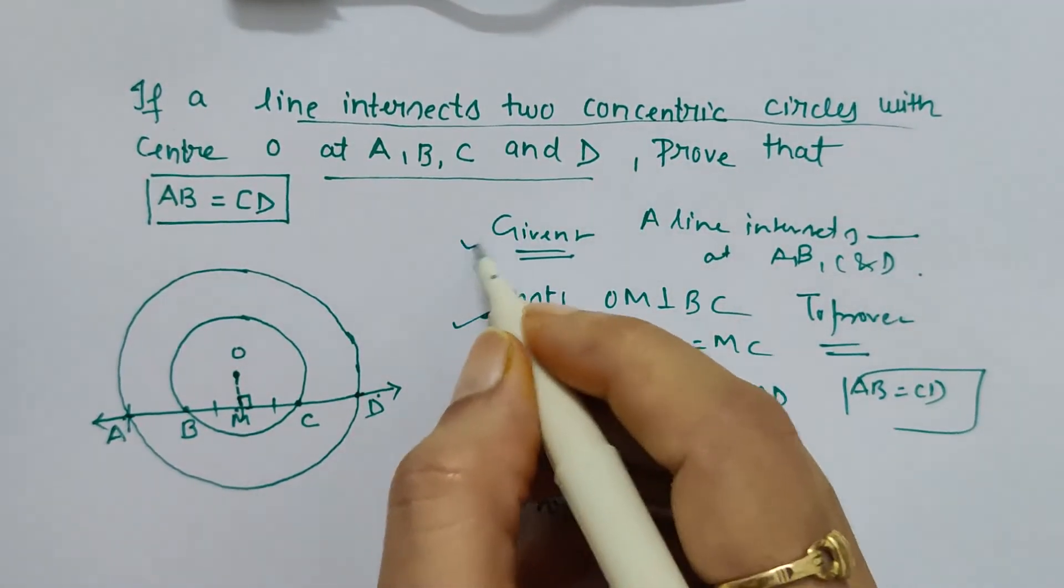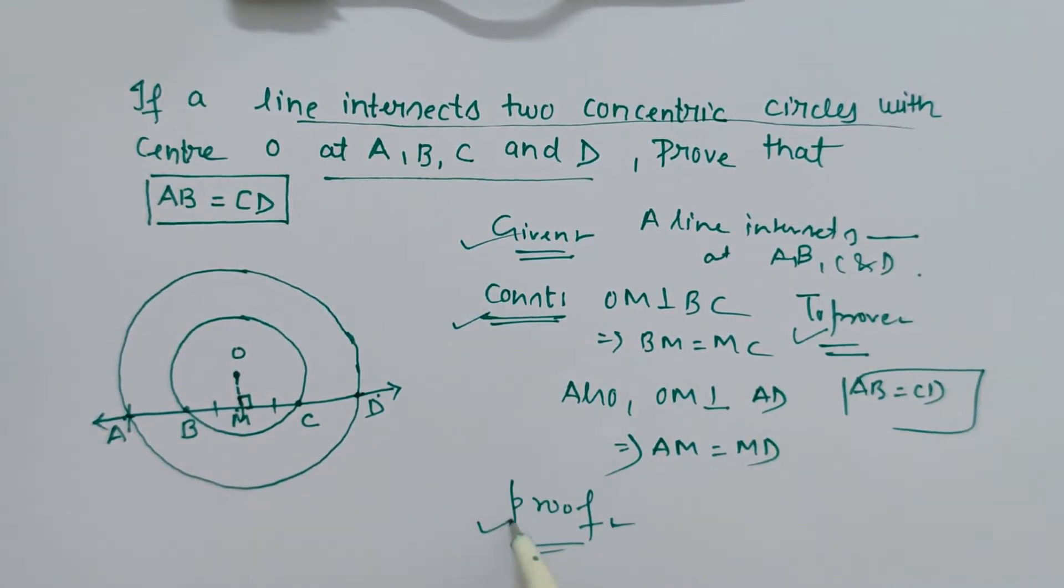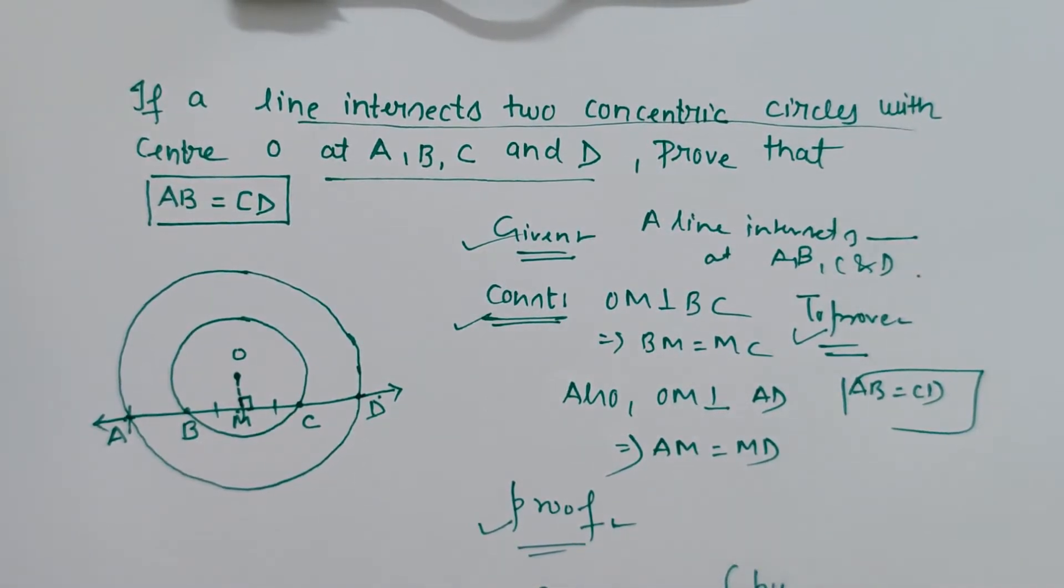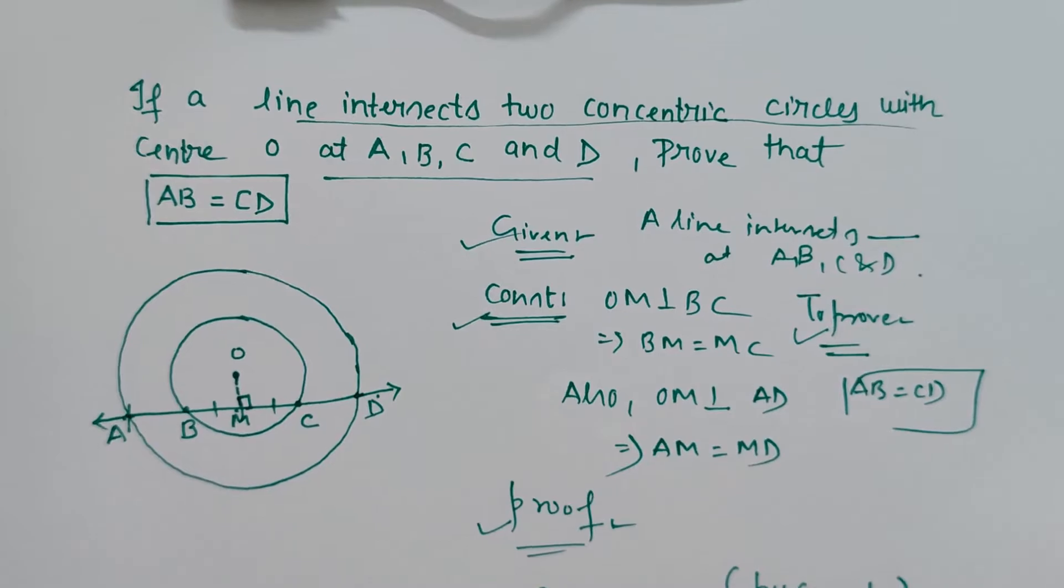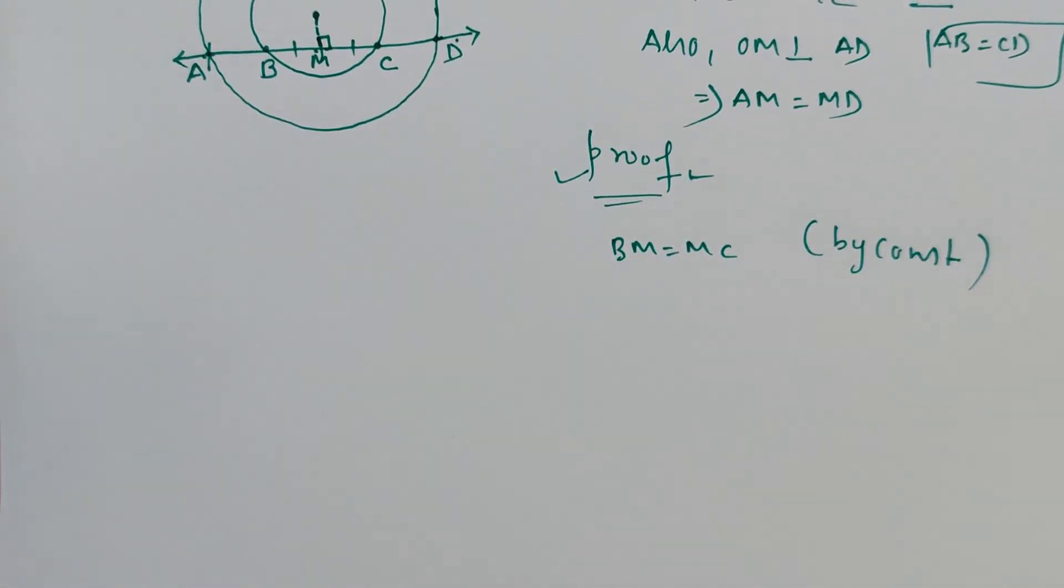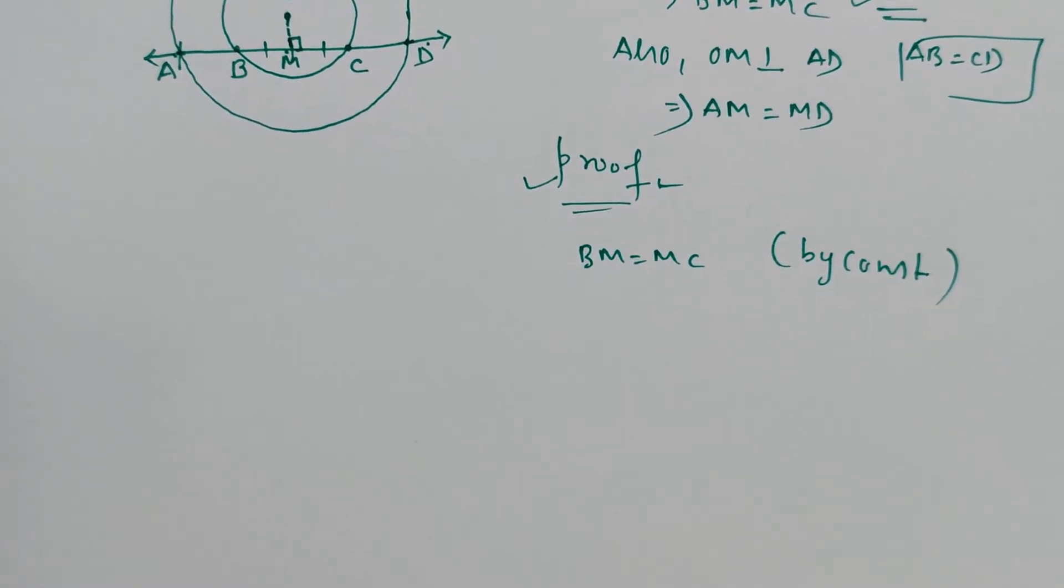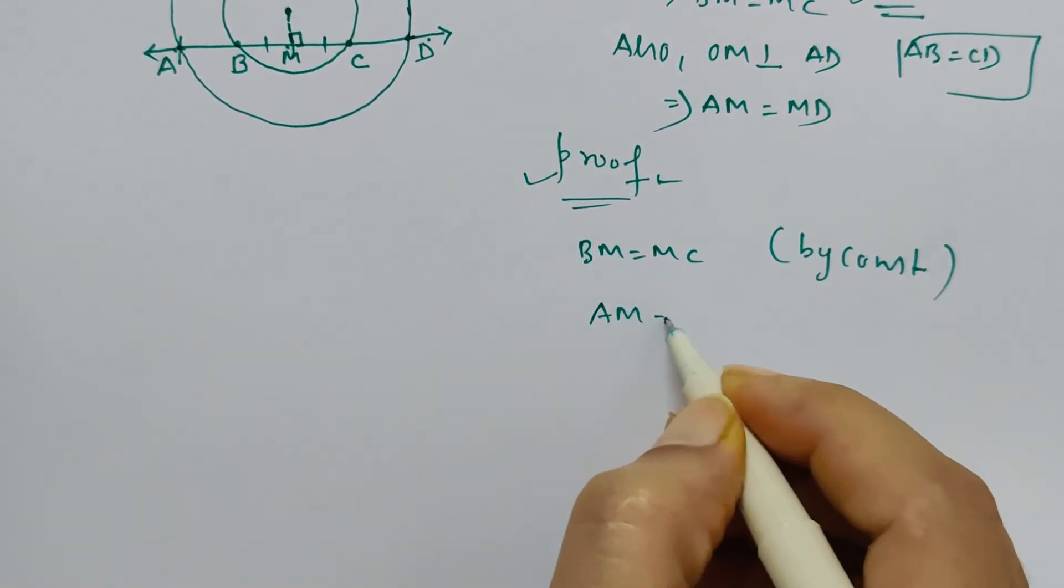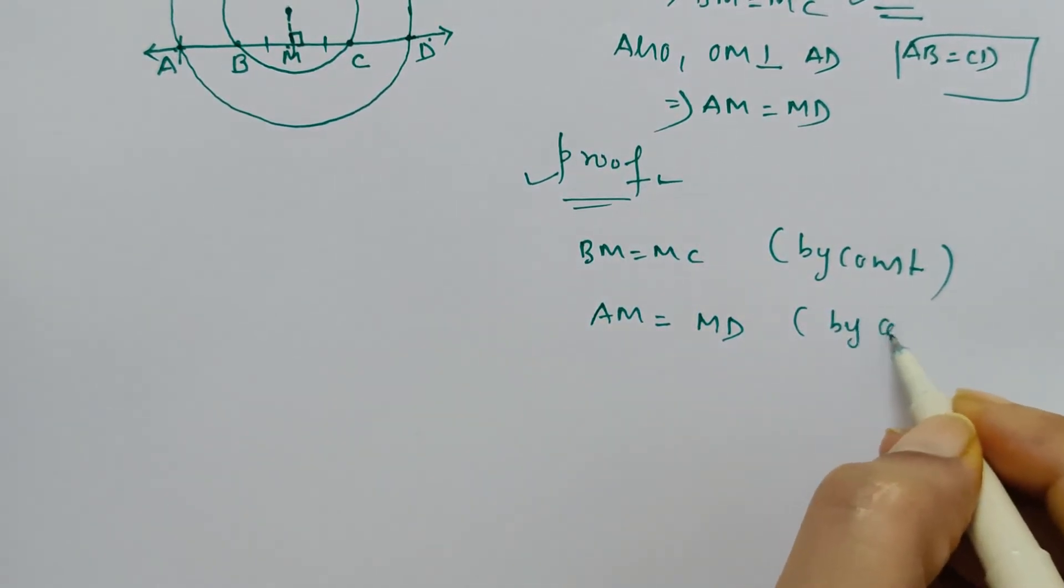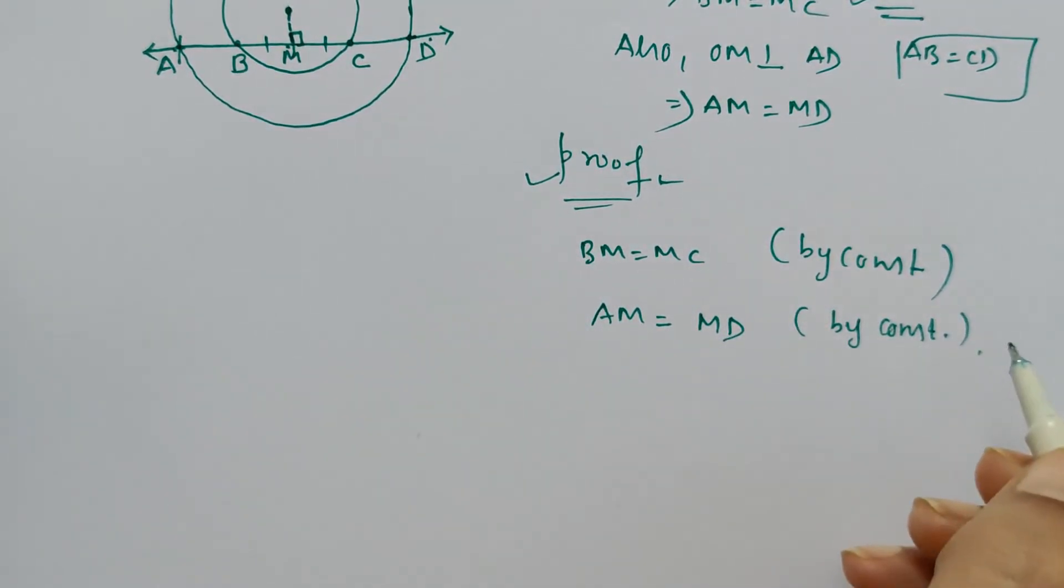In the proof, we can write: BM equals MC by construction. Also, we know AM equals MD, again by construction.